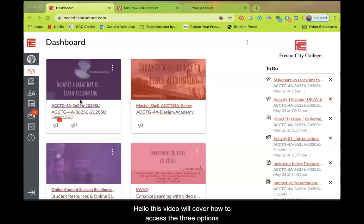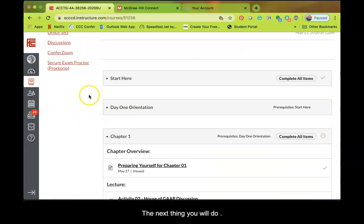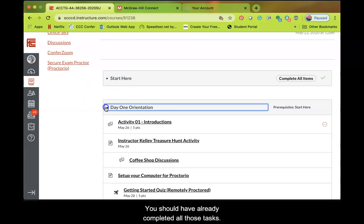Hello, this video will cover how to access the three options for reading or reviewing the material to prepare for each chapter. First thing you want to do is click on your course. Next, you will be taken to the home page where you'll see the Start Here module and the Day One Orientation.